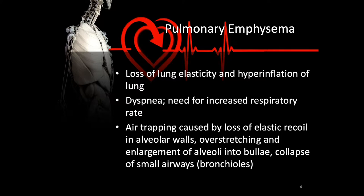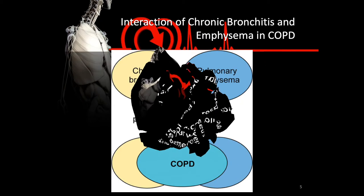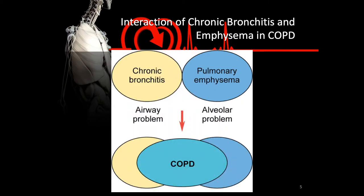For most patients diagnosed with COPD, it turns out they have both pulmonary emphysema and chronic bronchitis. It is helpful to remember that chronic bronchitis is primarily a problem with the airways, while pulmonary emphysema is a primary problem of the alveoli. Most patients diagnosed with COPD will have both diseases, or even a little of one and more of the other.